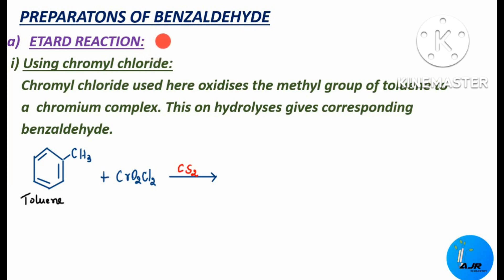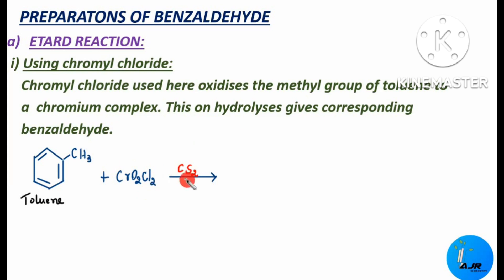The first method is the Etard reaction. In the Etard reaction, we will be making use of two types of reagents: one is chromyl chloride and the other is chromic oxide. First, let us see how chromyl chloride is used. Chromyl chloride oxidizes the methyl group of toluene — a CH3 group attached to a benzene ring — converting it to a chromium complex. This chromium complex then undergoes hydrolysis to give benzaldehyde.